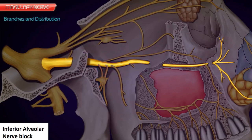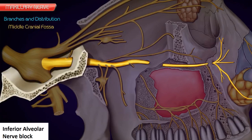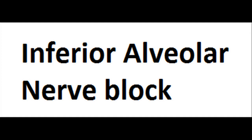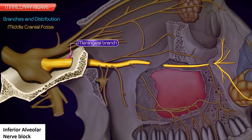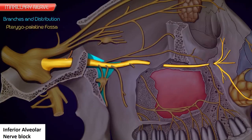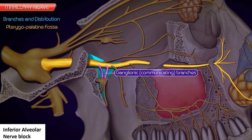Branches and Distribution. The maxillary nerve gives off the following branches. In the middle cranial fossa: a meningeal branch which supplies the dura mater. In the pterygopalatine fossa: ganglionic or communicating branches, two in number, to the pterygopalatine ganglion.